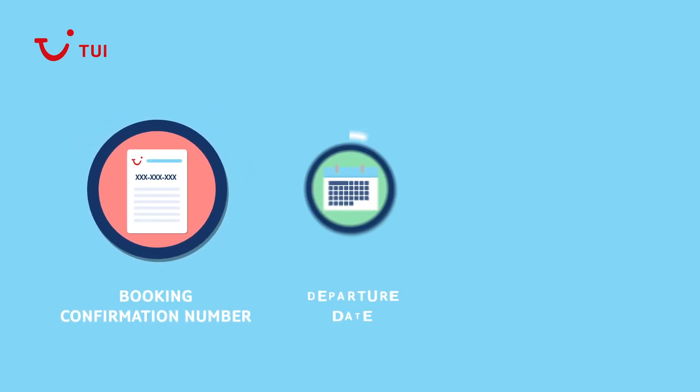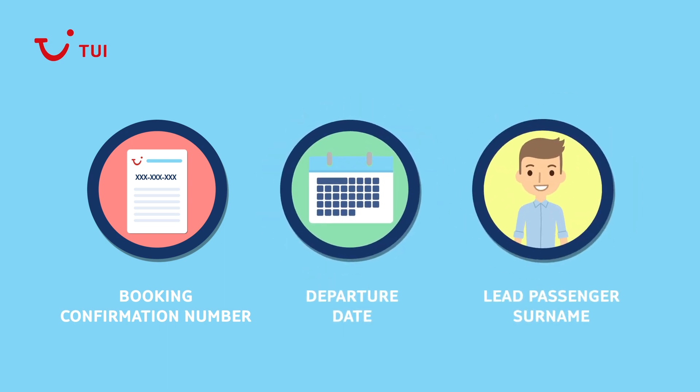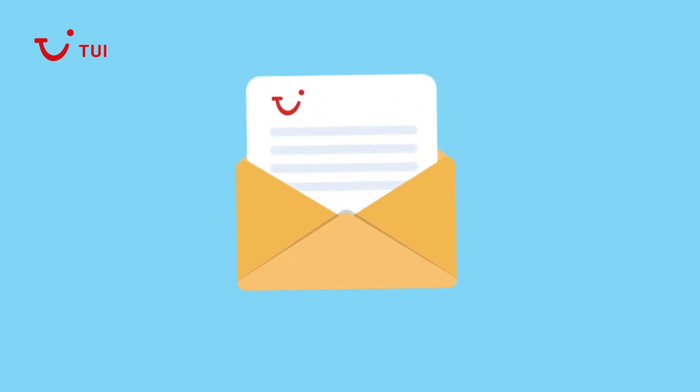To make a change to your booking, you'll need your booking confirmation number, your departure date and the surname of the lead passenger to hand. You can find all of this on the booking confirmation email that we will have sent to you when you booked.